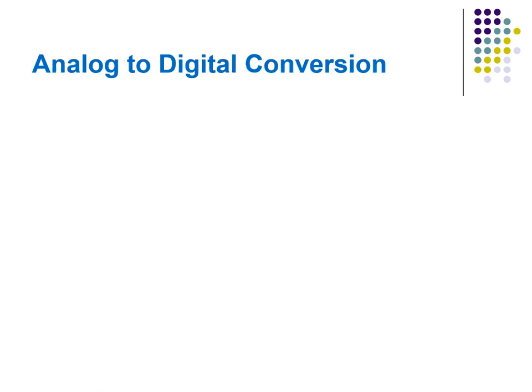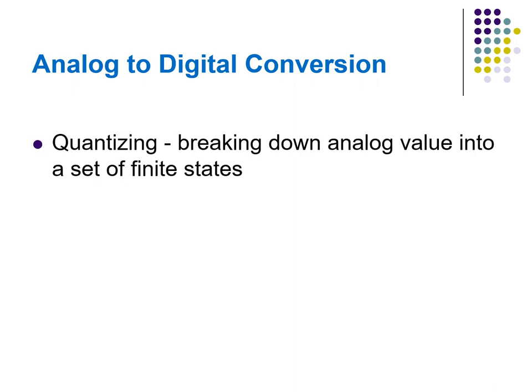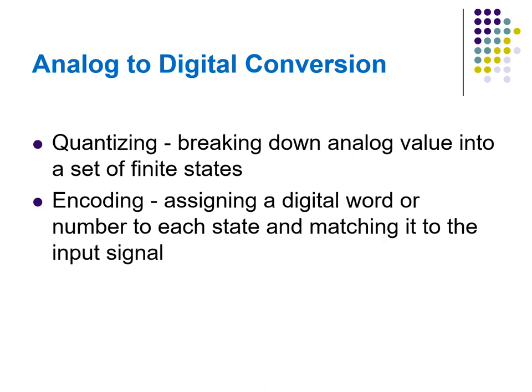Analog to digital conversion is a two-step process: quantizing and encoding. Quantizing is breaking down an analog value into a set of finite states. Encoding is assigning a digital word or number to each state and matching it to the input signal.